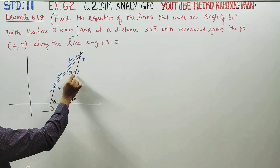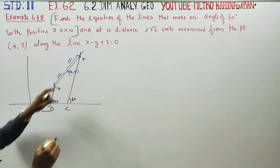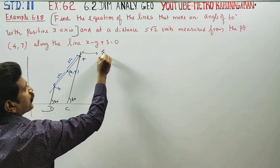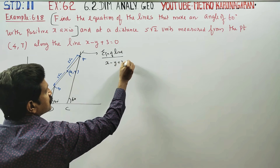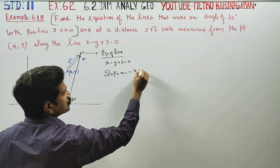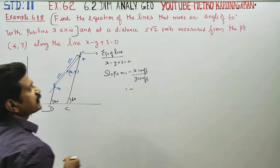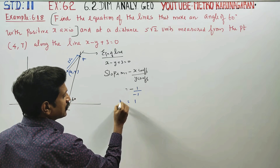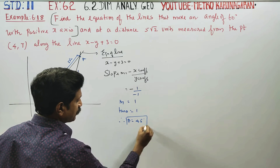The key information given is: point (4,7) and distance 5 root 2. The given equation of the black color line is x minus y plus 3 is equal to 0. To find the slope: m is equal to minus of x-coefficient divided by y-coefficient, which is minus of 1 divided by minus 1, answer is 1. Slope m equals tan theta equals 1, so theta equals 45 degrees.